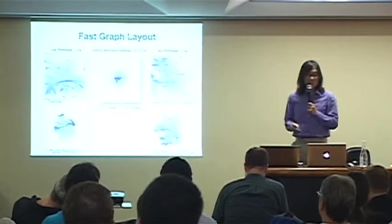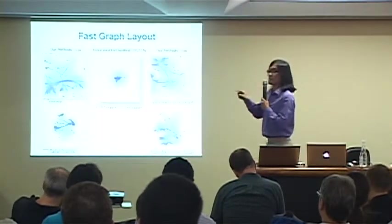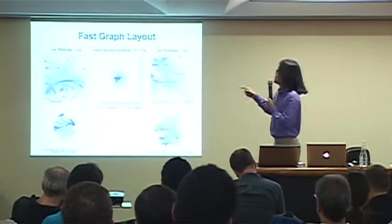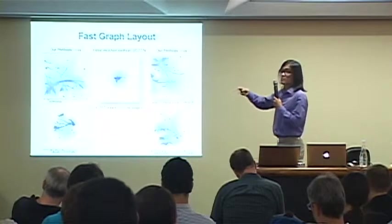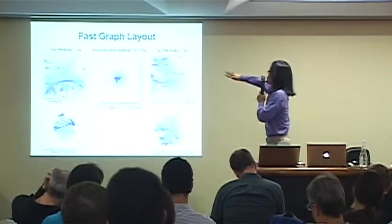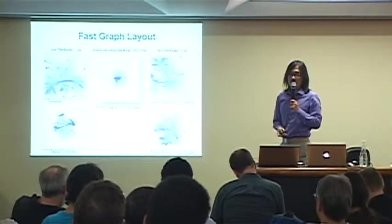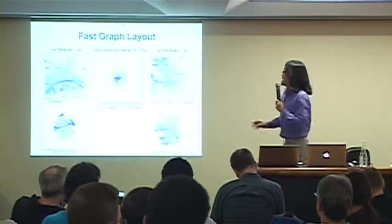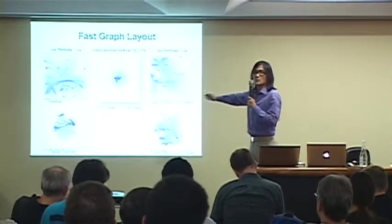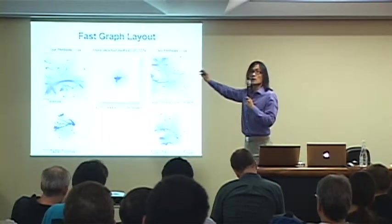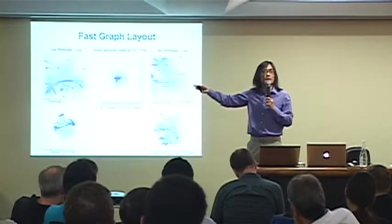So our method is based on a hierarchical clustering step. After that, we use a space filling curve or tree map partition. Basically, we try to utilize the screen space or display space we have as much as possible. And then once we do that, we start seeing structure. And we feel this gives you a good overview of the graph. From here, you can do selection and then you can drill down.